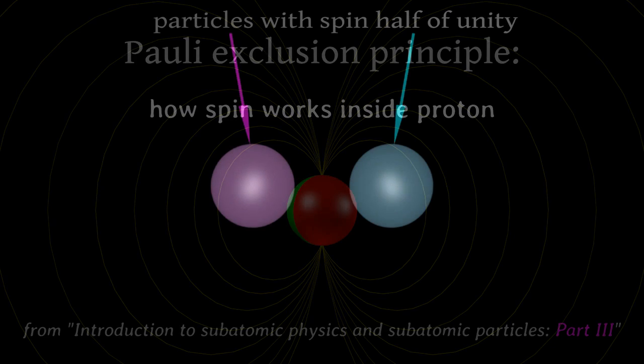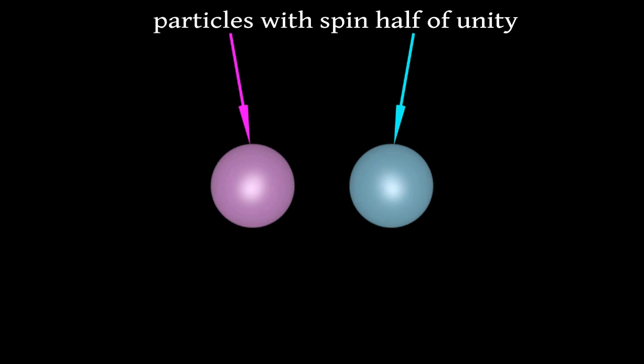We have two particles with spin half of unity, which we can imagine as a top toy in the form of a half sphere.